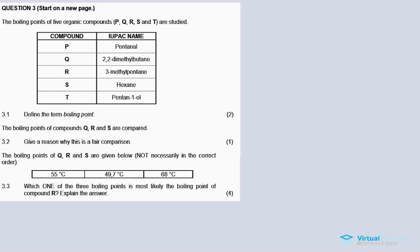Now question three: The boiling points of five organic compounds P, Q, R, S, and T are studied. So the compounds are in a column - P, Q, R, S, and T - and then the IUPAC name for each compound, so each compound belongs to a specific homologous series. For instance, P is an aldehyde, Q, R, and S are alkanes, and then T is an alcohol.